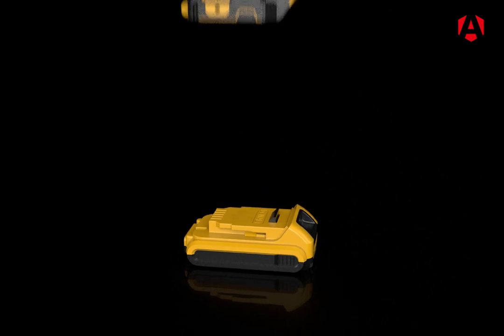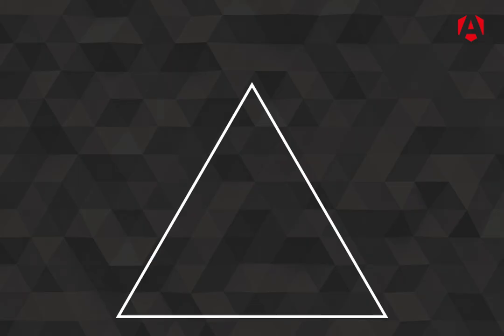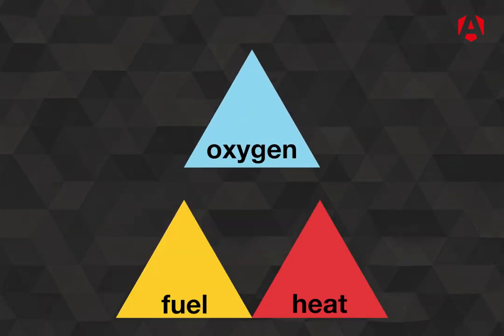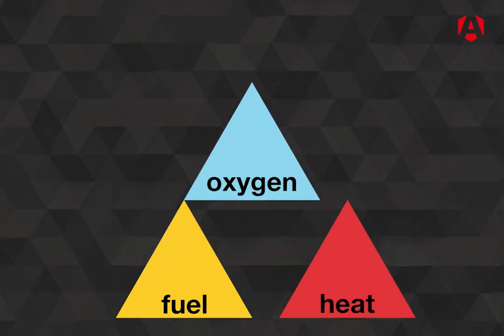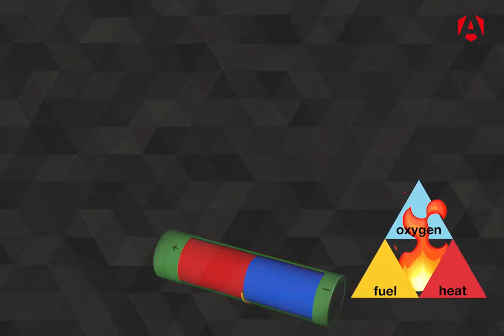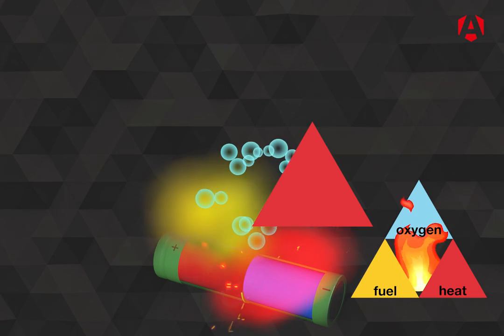The fire triangle shows us that a fire needs heat, oxygen, and fuel. By removing any of these, the fire will go out. However, when a Li-ion cell fails, the reaction continually produces heat, oxygen, and flammable gases, providing all the ingredients to make a fire.